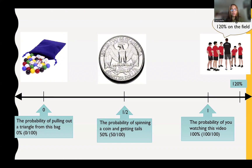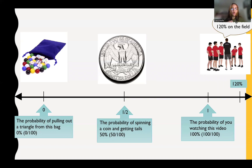Now when we're talking about 100% probability, what we mean is that there is a 100% likelihood that that event will occur. So for example, if you're already watching this video, that means that the probability of you watching this video is 100%. Or for example, if I have a bag with only green marbles, the probability of me pulling out a green marble is 100%.